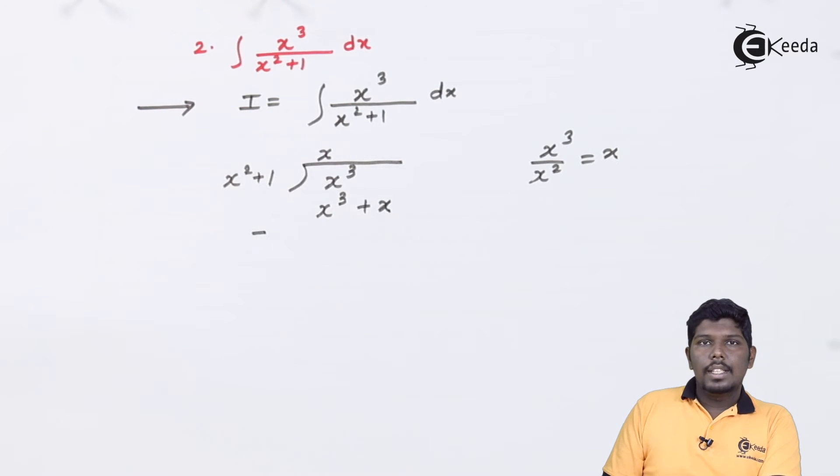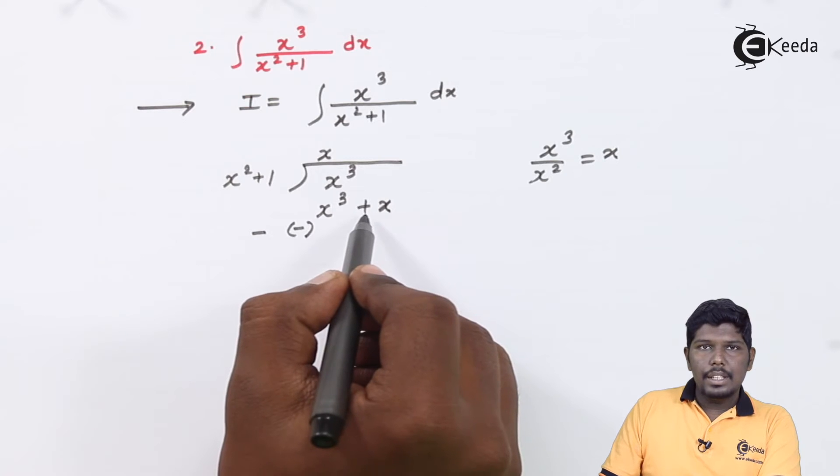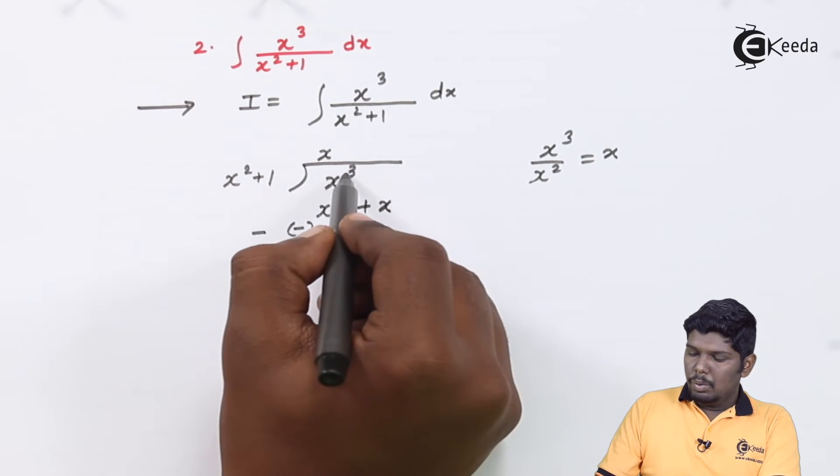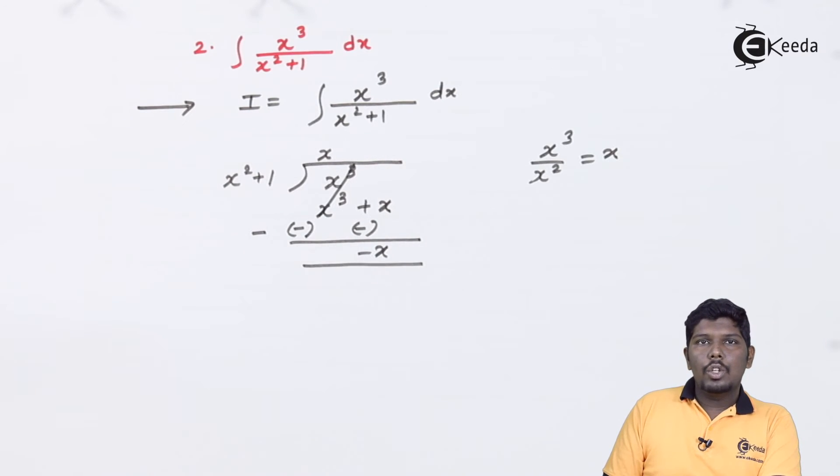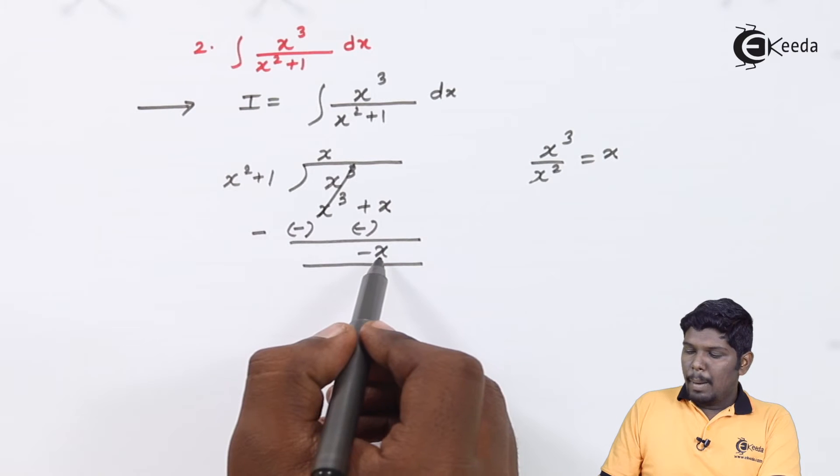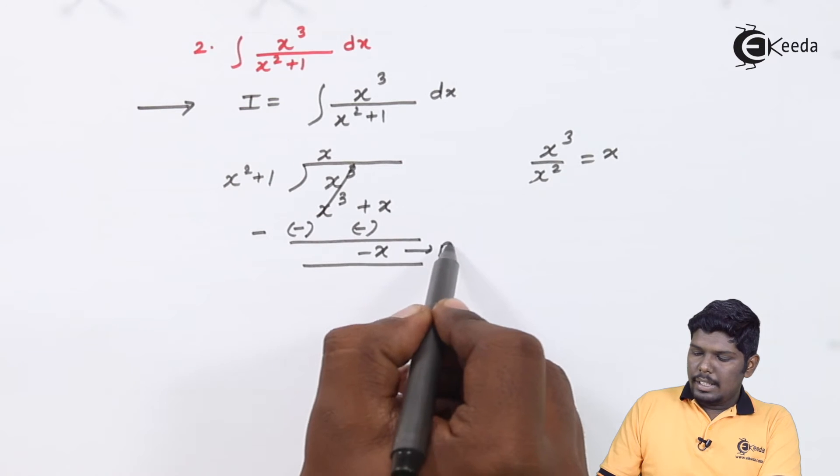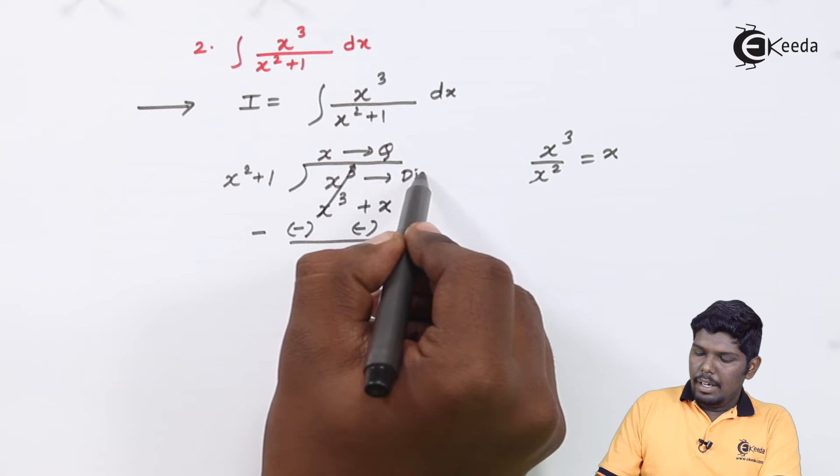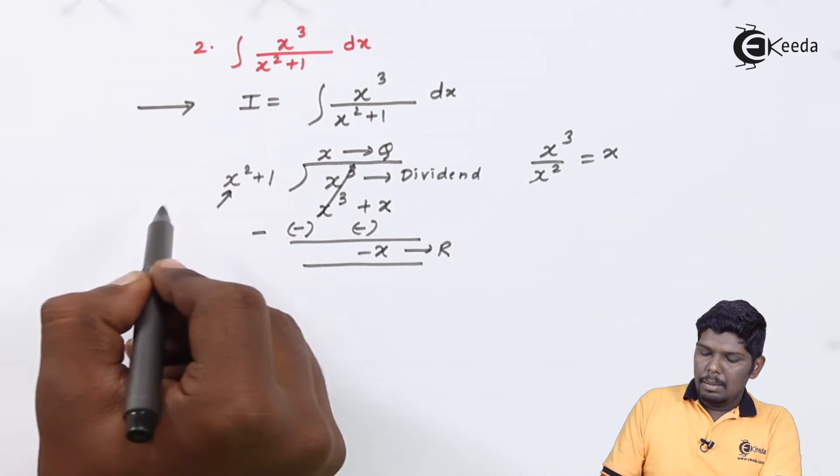The next step is to subtract these two equations. During subtraction, sign of the second equation will be changed. Meaning plus x³ will be considered as minus x³ and plus x will become minus x. This will give you minus x. Here you can stop this process as the power of x is reduced below 2. This part is called as remainder, this part is called as quotient. x³ is our dividend and x²+1 becomes divisor.